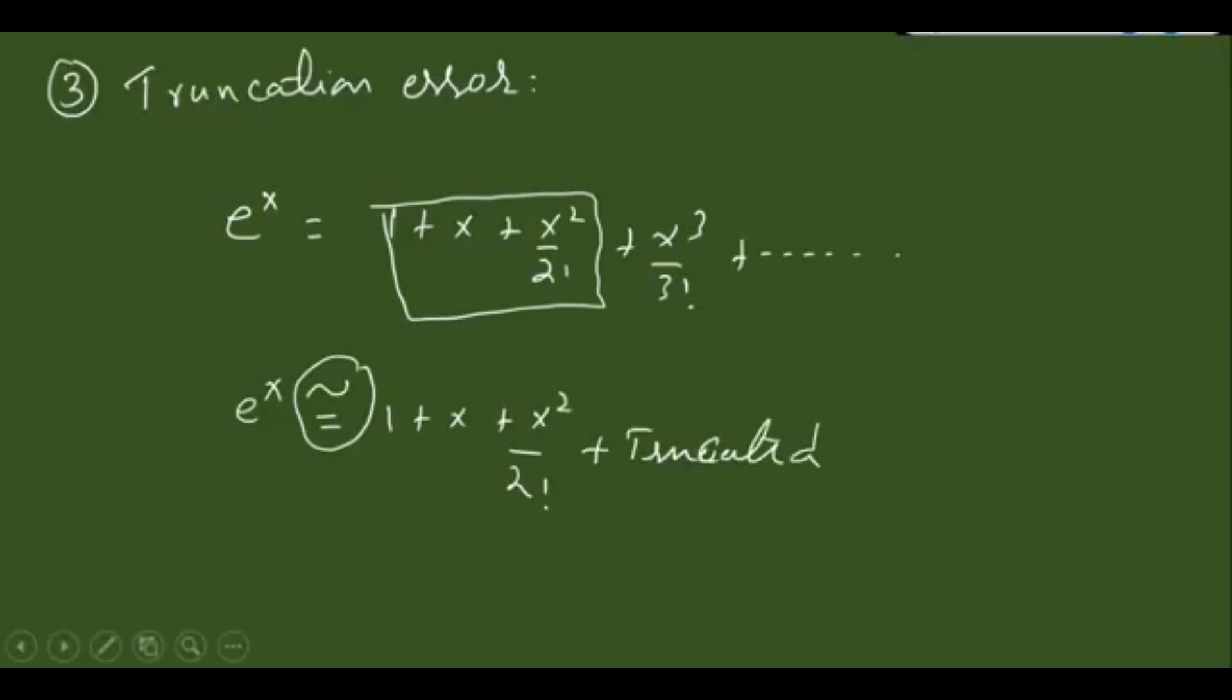Whenever you truncate something, you bring error in the calculation. The only reason for truncation is to have ease in calculation because we think adding or including all the computations is very difficult. So we just truncate—two terms, three terms, four terms. What does truncation error mean? Usually when we convert any infinite process...